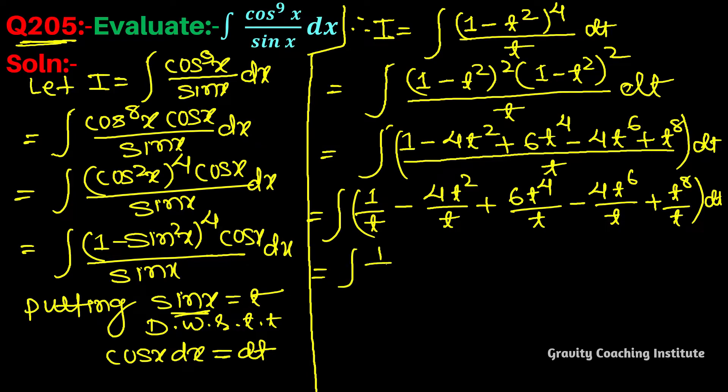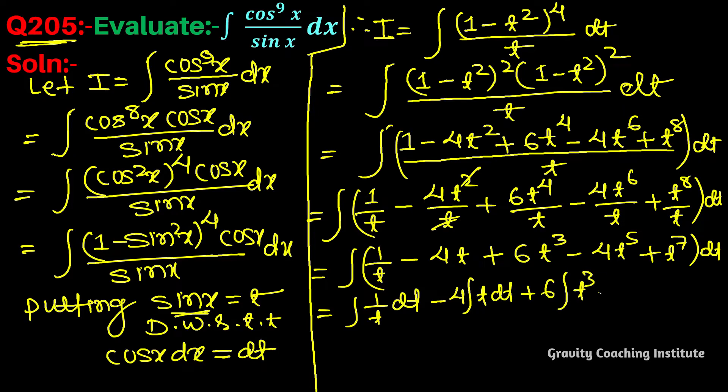So 1 by t minus 4 t plus 6 t cube minus 4 t to the power 5 plus t to the power 7 dt equals integration 1 by t dt minus 4 integration t dt plus 6 integration t cube dt minus 4 integration t to the power 5 dt plus integration t to the power 7 dt, which gives log mod t minus 4 t square by 2.